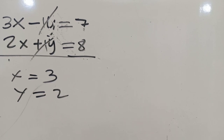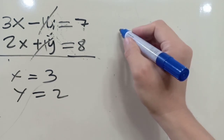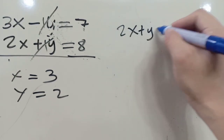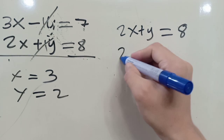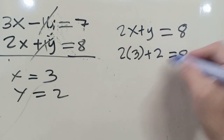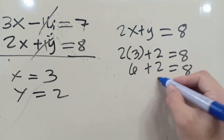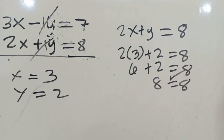Let's check our answer by substituting into the second equation: 2x plus y equals 8. So 2 times 3 plus 2 equals 8, which gives 6 plus 2 equals 8. Since 8 equals 8, our values of x and y are correct.